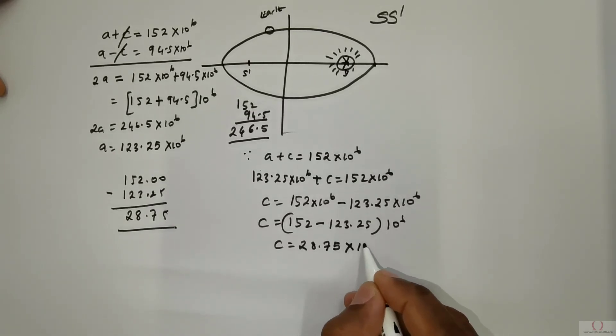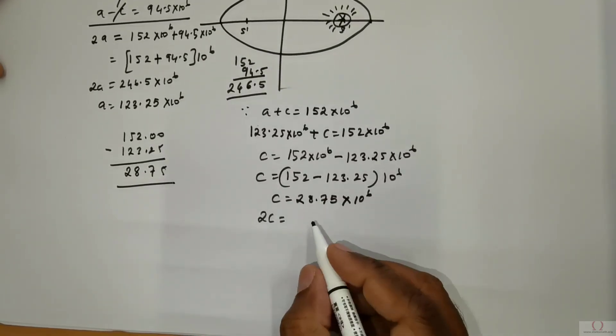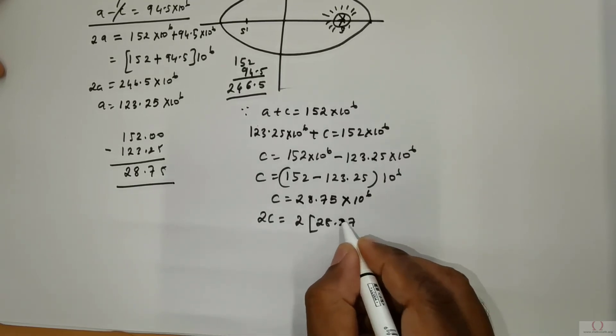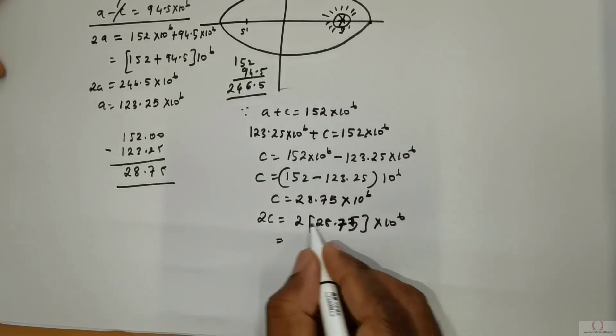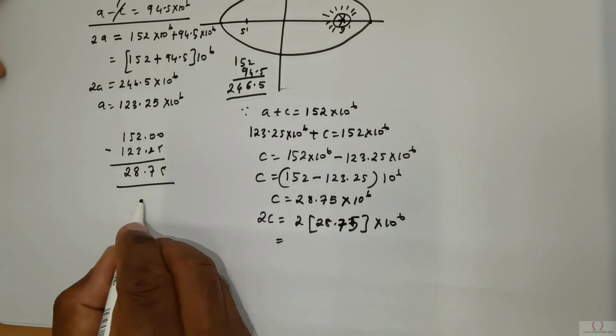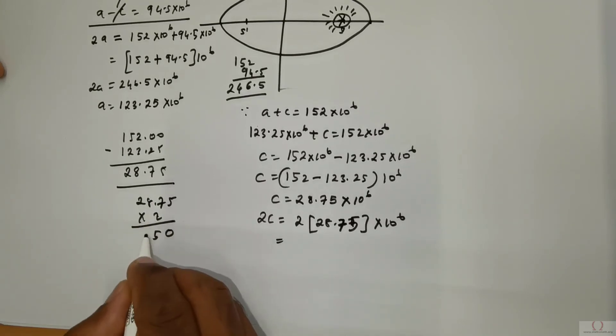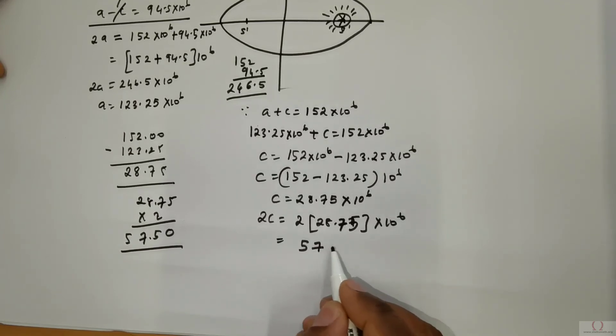And multiplied with 10 to the power 6. This is the value of c so therefore 2c has to be found out so that's going to be 2 times 28.75 times 10 to the power 6. 2 times 28.75 gives me 57.5 times 10 to the power 6.